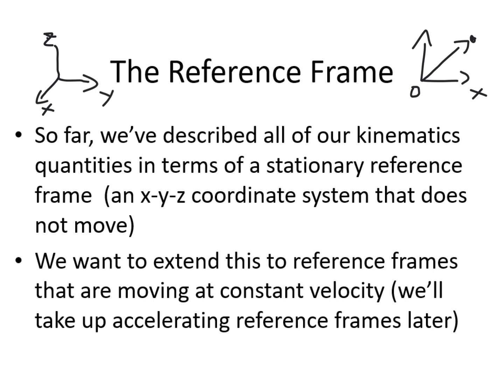Often, most often, that velocity is going to be zero, but sometimes it can be non-zero. As long as it's constant, it'll work out fine. There's a term for that — it's called an inertial reference frame, or sometimes an inertial frame of reference. We'll learn later why it's called that, but I just want to mention it because I'm used to saying it; these are constant-velocity reference frames.